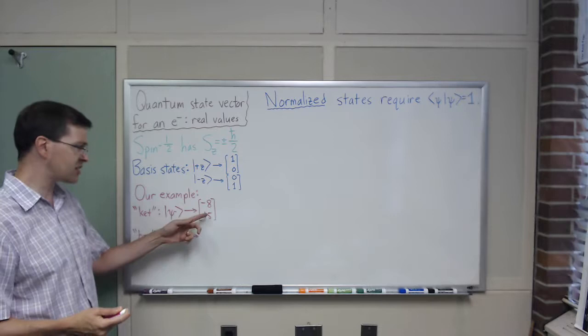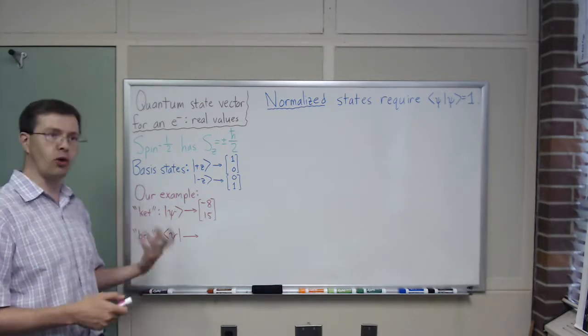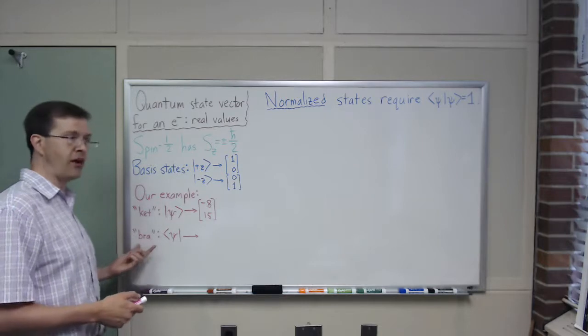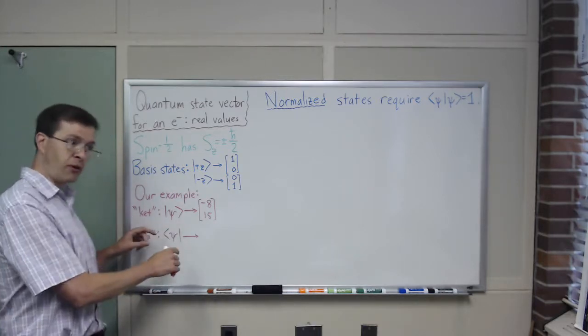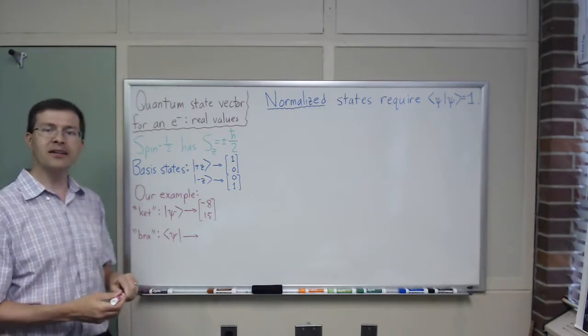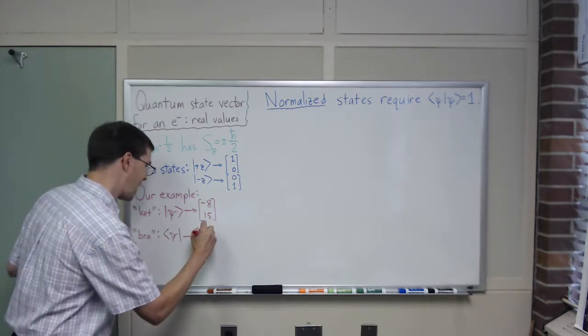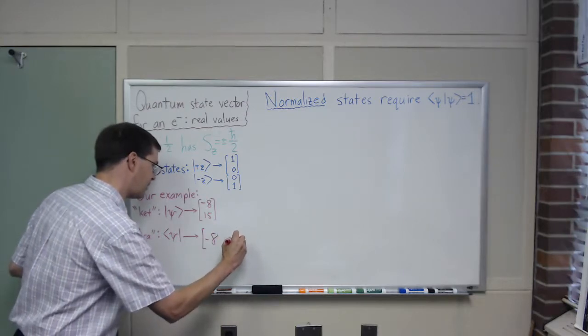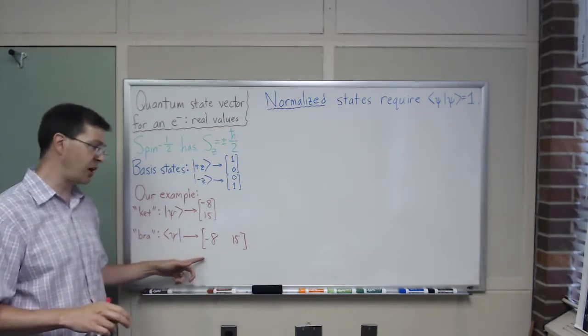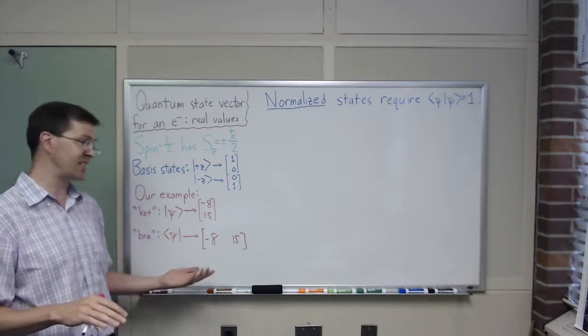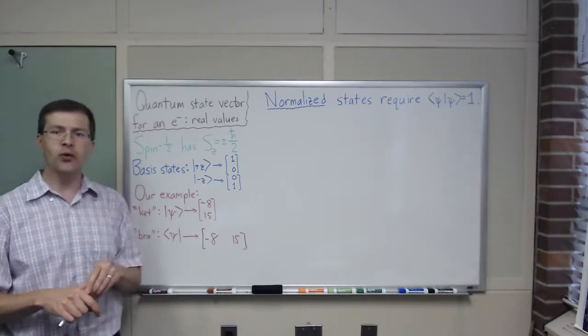Why do I say it's a ket? Well, it's represented as a column vector. This is a state. One useful thing we're going to use is the dual vector to this ket state vector, which is called a bra vector. The bra vector is represented as angle bracket on the opposite side, and in terms of its representation as a matrix, it's just the transpose of this matrix. So the ψ bra is (-8, 15) as a row matrix. This is a column, this is a row. If this were complex number stuff, this would also be complex conjugates, but we get to skip that because we're looking at a case that doesn't have any complex valued things.